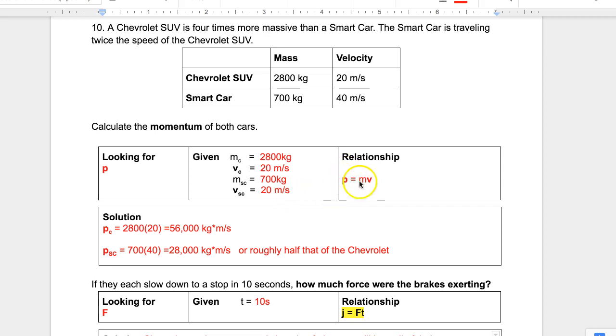We know momentum, P equals mass times velocity. For the Chevrolet, it's the mass, 2,800 kilograms times 20 meters per second, or 56,000 kilogram meters per second. While the smart car has a mass of 700 kilograms and a velocity of 40 meters per second, so it'll have a momentum of 28,000 kilogram meters per second,